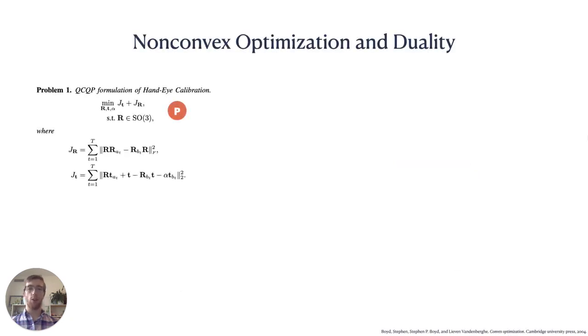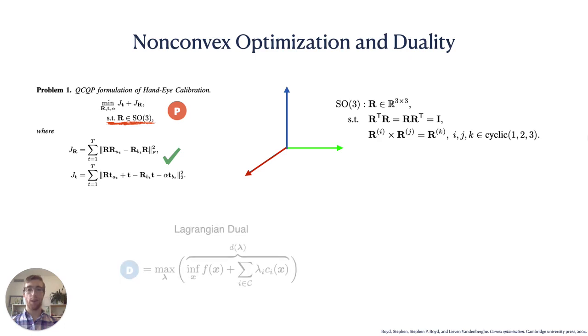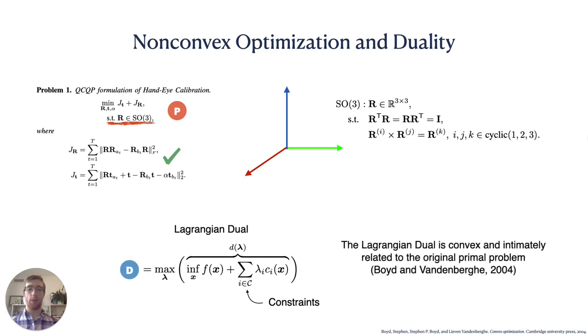Let's determine whether our QCQP formulation of hand-eye calibration is convex. The cost function, which is simply a sum of two norms, is certainly convex. However, the SO3 constraints are quadratic equality constraints that describe a non-convex set. Therefore, we are dealing with a difficult non-convex optimization problem. Fortunately, there are two related ways we can attempt to convexify our optimization problem. Both of them lead to semi-definite programs which can be solved with a variety of generic algorithms, including efficient interior point methods. In this work, we will attack problem 1 using its Lagrangian dual. This dual optimization problem is convex and intimately related to the original or primal problem P.